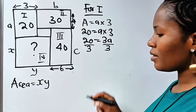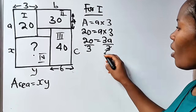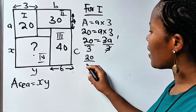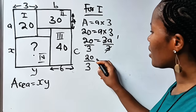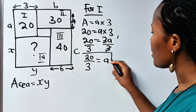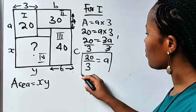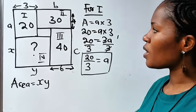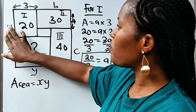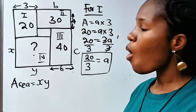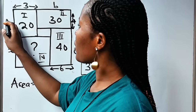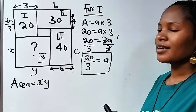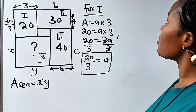We have 20 is equal to 3a. Dividing both sides by 3 gives us 20 divided by 3 is equal to a. So a equals 20 over 3. We replace this with 20 over 3.